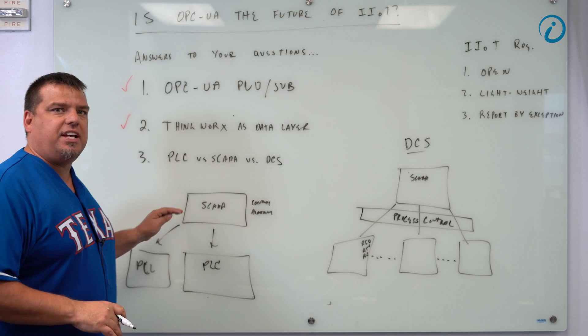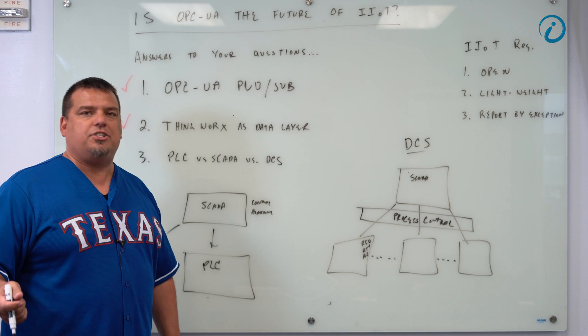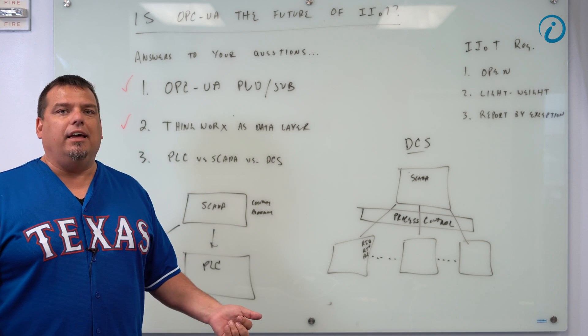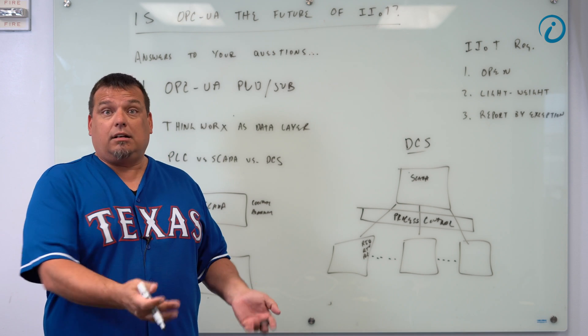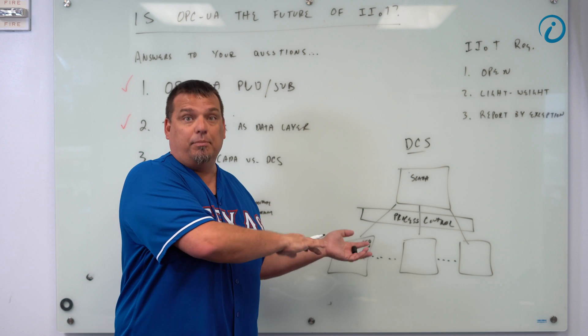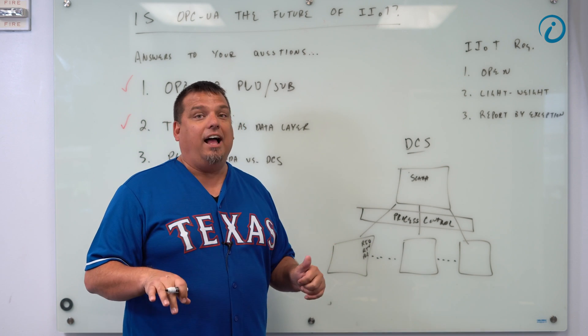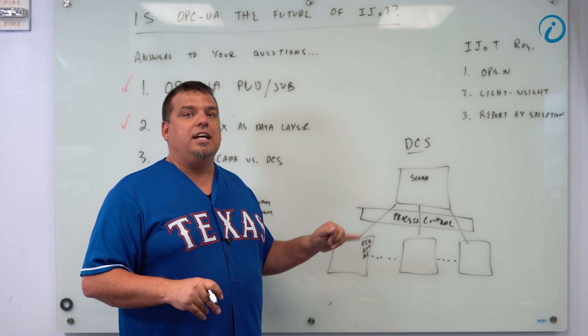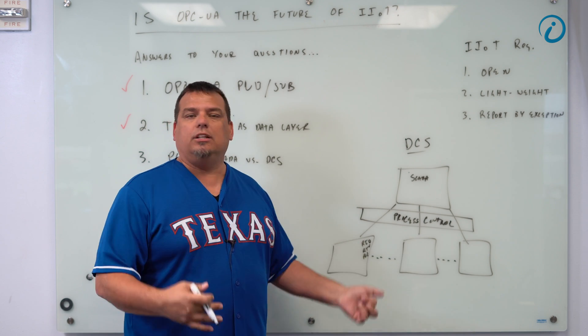With PLCs and SCADA system, think of them as blank slates. When I buy an Allen Bradley control logics, it doesn't have a program on it. I can take a program I've already written and put it on there, or I can just write a new one from scratch, which is the way it normally works. A distributed control system can come completely blank. But in this day and age, normally it does not. Normally the DCS comes with the program to run your process already loaded onto it.